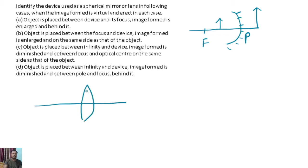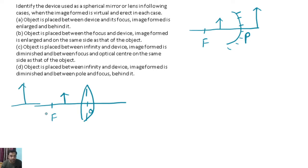For the convex lens, the object is placed between the optical center and focus — here we keep our object. The image is formed behind the focus; it is virtual, erect and enlarged.